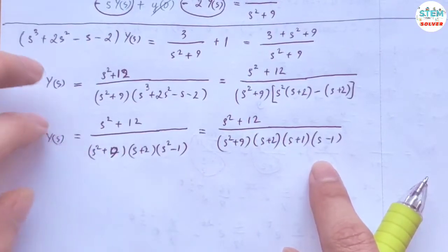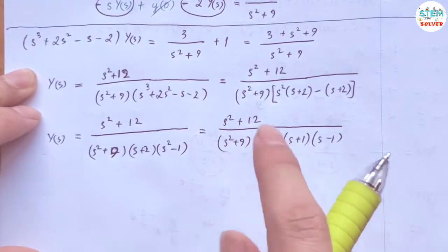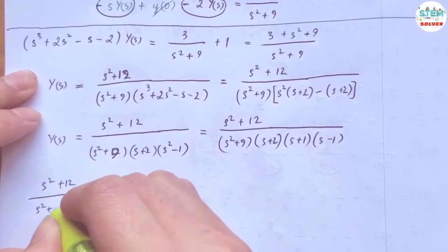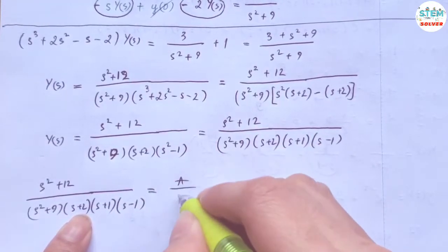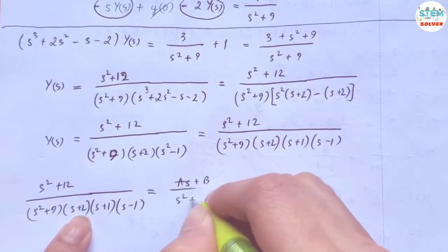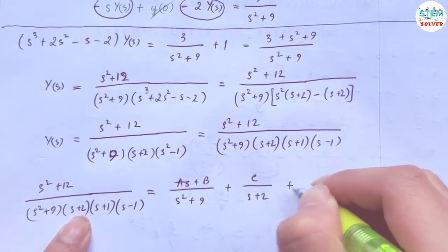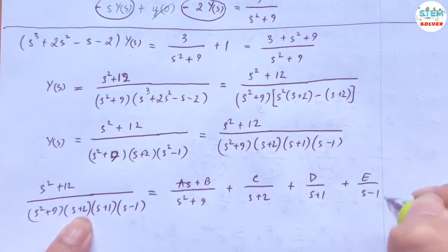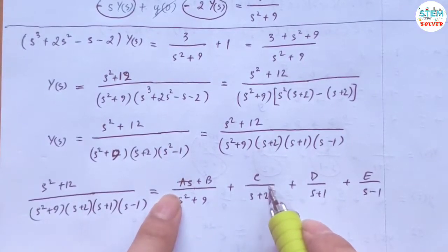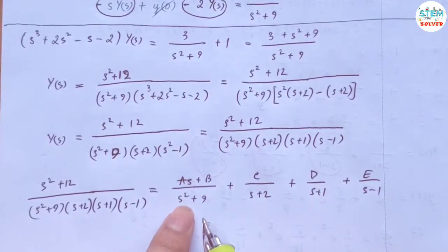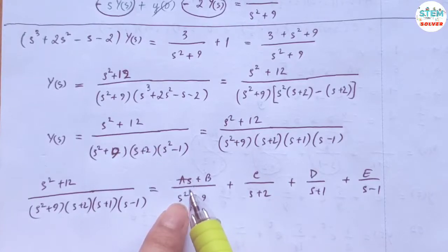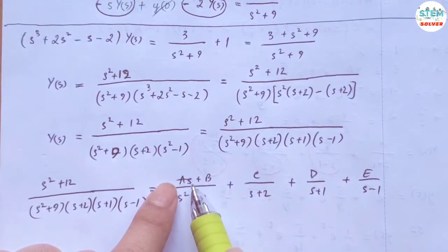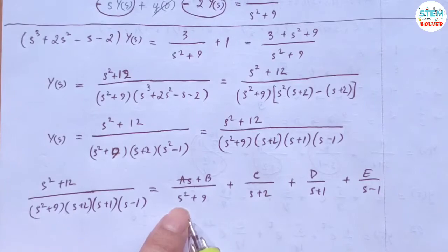We use partial fraction decomposition. The expression equals (As + B) over (s squared plus 9), plus C over (s plus 2), plus D over (s plus 1), plus E over (s minus 1). The reason (s squared plus 9) has As + B in the numerator is that it is an irreducible quadratic, so we must account for both a linear and constant term. We don't know whether A is zero or not, so we include both possibilities.